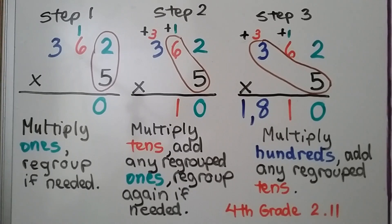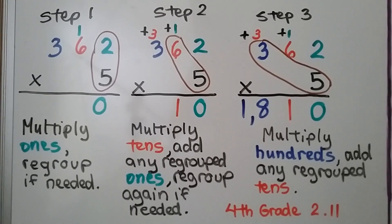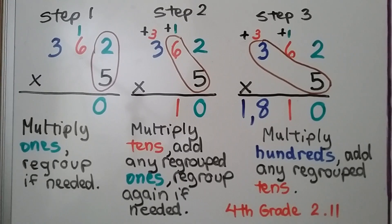We multiply and then add any regrouped number. We learned how to multiply three and four digit numbers by a one-digit number back in fourth grade in video 2.11, and I'll have that linked in the description also.